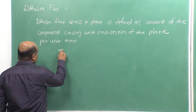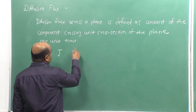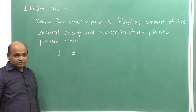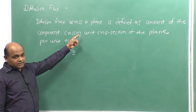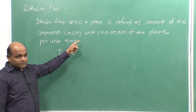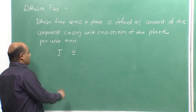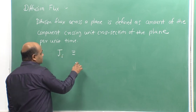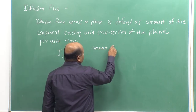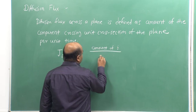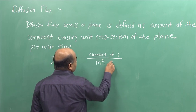The diffusion flux is usually denoted by the symbol J, and as you can see from the definition, the unit of diffusion flux will be amount of the component per unit area per unit time. So the diffusion flux of component i has units of amount of i per unit area per unit time.